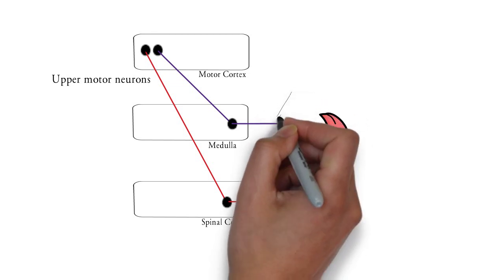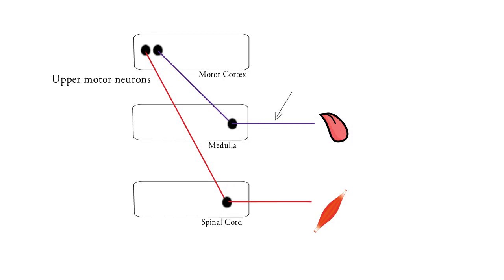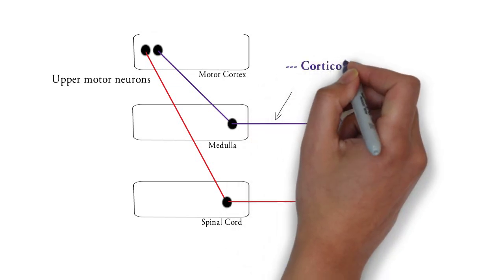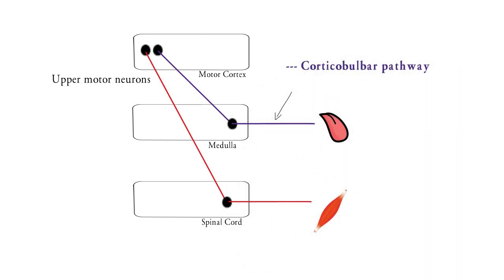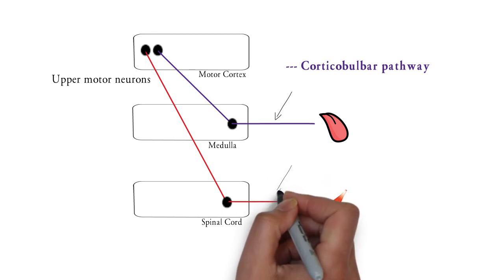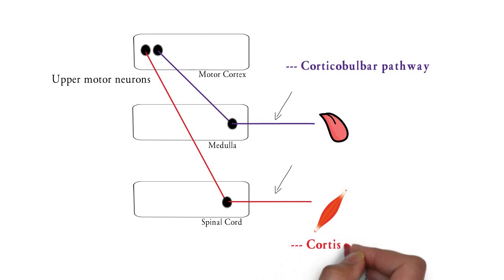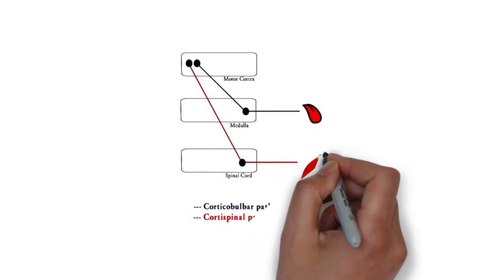So these are lower motor neurons from the brainstem as cranial nerves, and this pathway is known as the corticobulbar pathway. Remember, the word 'bulbar' means related to the medulla. The second pathway is the lower motor neurons of the spinal cord, known as the corticospinal tract. With the help of this concept, we will now see the clinical subtypes of MNDs.